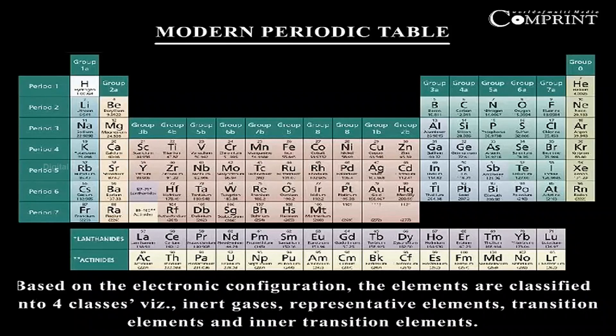Based on the electronic configuration, the elements are classified into inert gases, representative elements, transition elements, and inner transition elements.